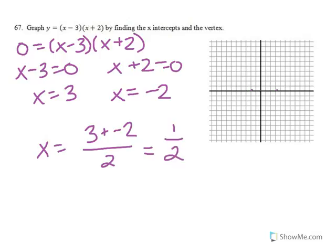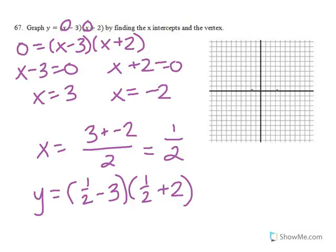But that's only part of my vertex. I need to find the y-coordinate of my vertex. So take this x and plug it in up here for the x's. So y will equal 1 half minus 3 times 1 half plus 2. 1 half minus 3 is negative 2 and a half, but I'm going to write that as negative 5 over 2. 1 half plus 2 is 2 and a half. I'm going to write that as 5 over 2.